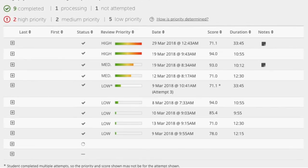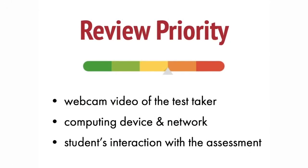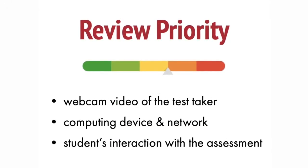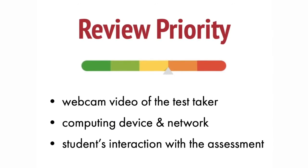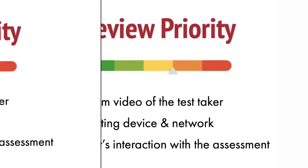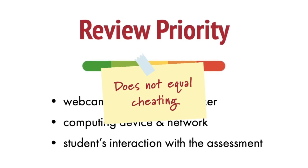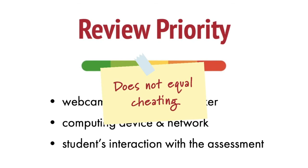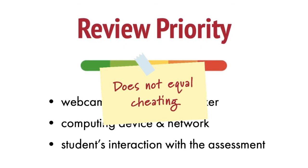Videos can be marked as reviewed or have comments added by the instructor. The review priority value is derived from three sources of data: the webcam video of the test taker, the computing device and network used for the assessment, and the student's interaction with the assessment itself. Remember, flags aren't cheating. Flagged events and the review priority value don't determine whether a student has cheated or not. Rather, they are tools to help identify suspicious activities, anomalies, or situations where the data is of too low a quality to analyze.